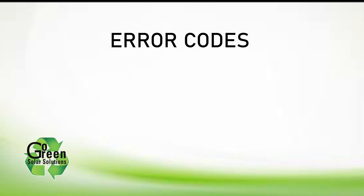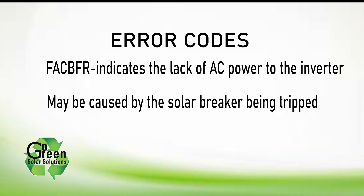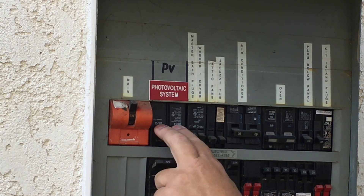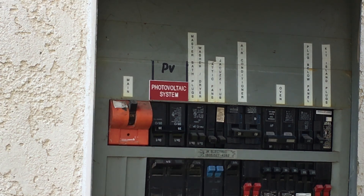You should also check for error codes on the inverter display and write them down. FACBFR is a common error code that indicates the lack of AC utility power to the inverter. The most common cause is that the main electrical panel solar breaker has tripped. To reset, turn the breaker off and back on again — that often solves the problem.